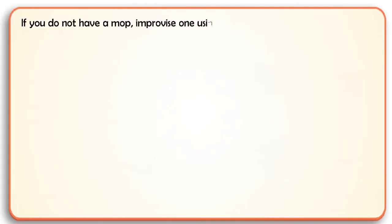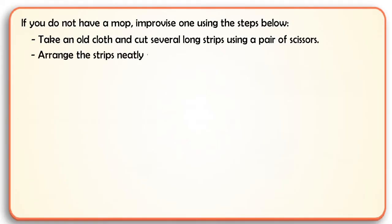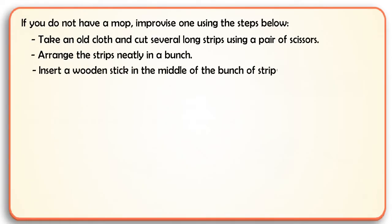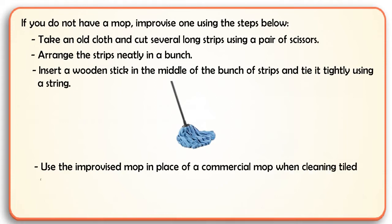If you do not have a mop, improvise one using the steps below. Take an old cloth and cut several long strips using a pair of scissors. Arrange the strips neatly in a bunch. Insert a wooden stick in the middle of the bunch of strips and tie it tightly using a string. Use the improvised mop in place of a commercial mop when cleaning tile surfaces.